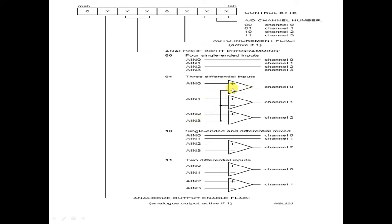In differential mode with 01, three comparators are used. Setting these bits to 10 uses channel 0 as single-ended while AIN2 and AIN3 work in differential mode. Setting 11 gives only two channels: AIN0 and AIN1 as channel 0 output. The next bit in the control byte enables or disables the analog output: setting it to 0 enables the analog output, and setting it to 1 enables DAC activity.